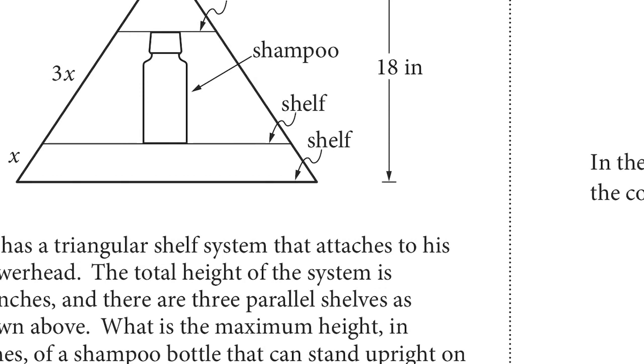So for question 16, we see this figure and the question says, Jim has a triangular shelf system that attaches to his shower head. The total height of the system is 18 inches.